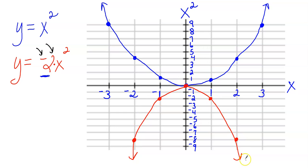That's how you describe the change. When you multiply by 2 — not counting the negative sign — it makes the graph appear skinnier. I hope you found this video helpful. Have a great day.